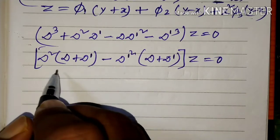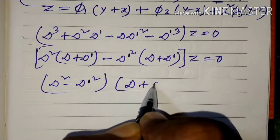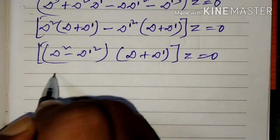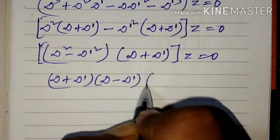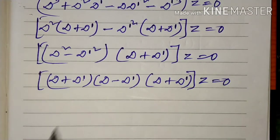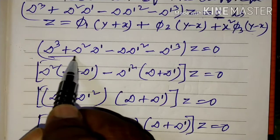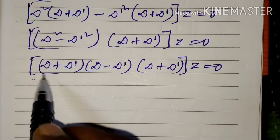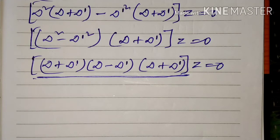यहाँ पर D² - D'² factor होता है जो (D + D') देता है, z = 0। इस तरह differential equation reducible है क्योंकि हमने Dq + D²D' - DD'² - D'³ को successfully factor करके दिखाया है।